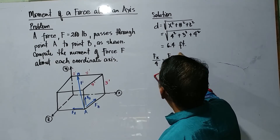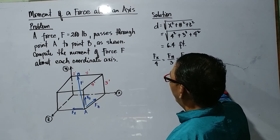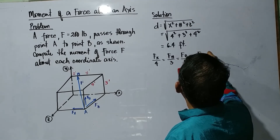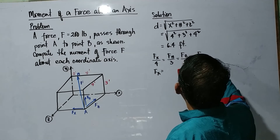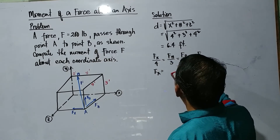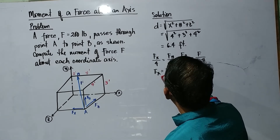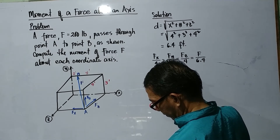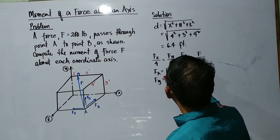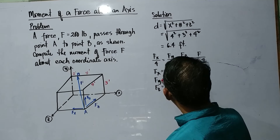And for our F components: we have Fx equals 4, Fy equals 3, and Fc equals 4. And our force over D, which is 6.4 — so we have now Fx. Cross multiply: our F is 200. Just substitute the values, so our Fx now is 125 pounds.